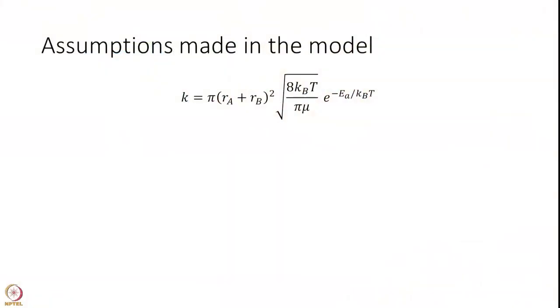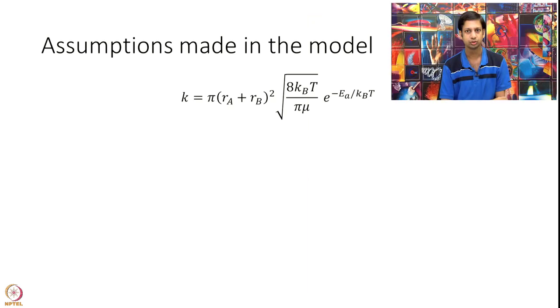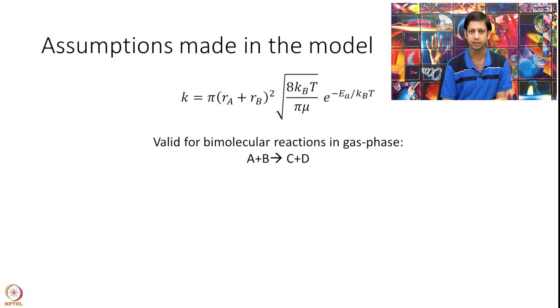Let us go over one by one all the assumptions we have made in deriving the rate equation. The rate equation we derived is valid only for bimolecular reactions in gas phase, A plus B going to products. A can equal B but it cannot be unimolecular or termolecular. It has to be bimolecular.